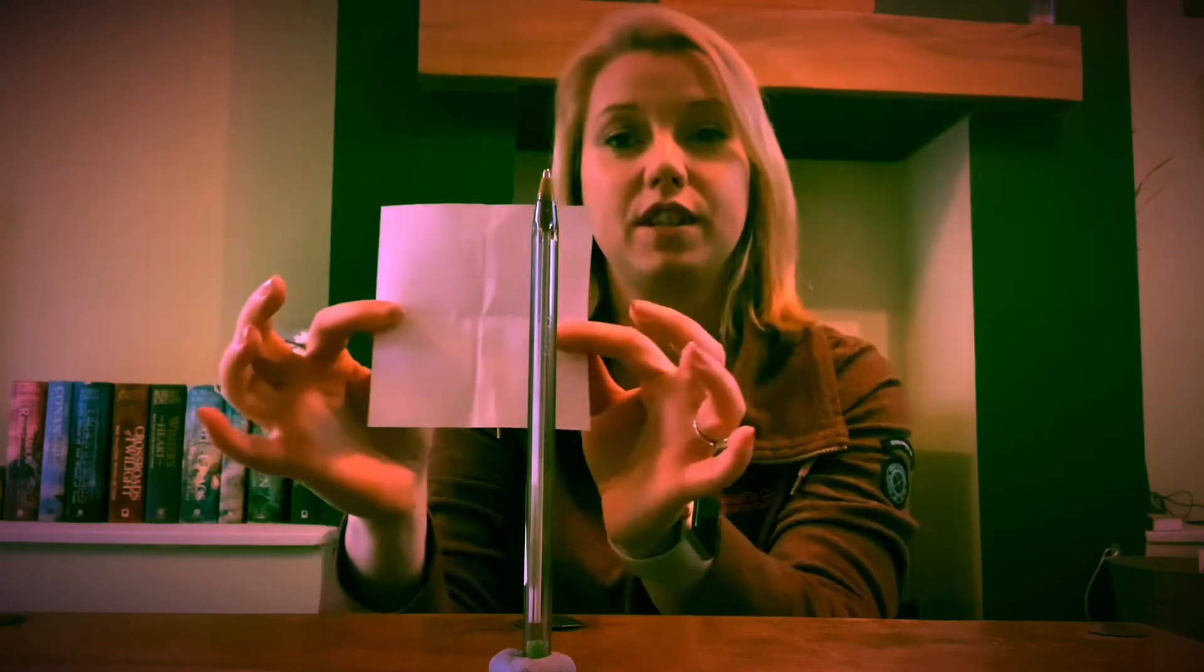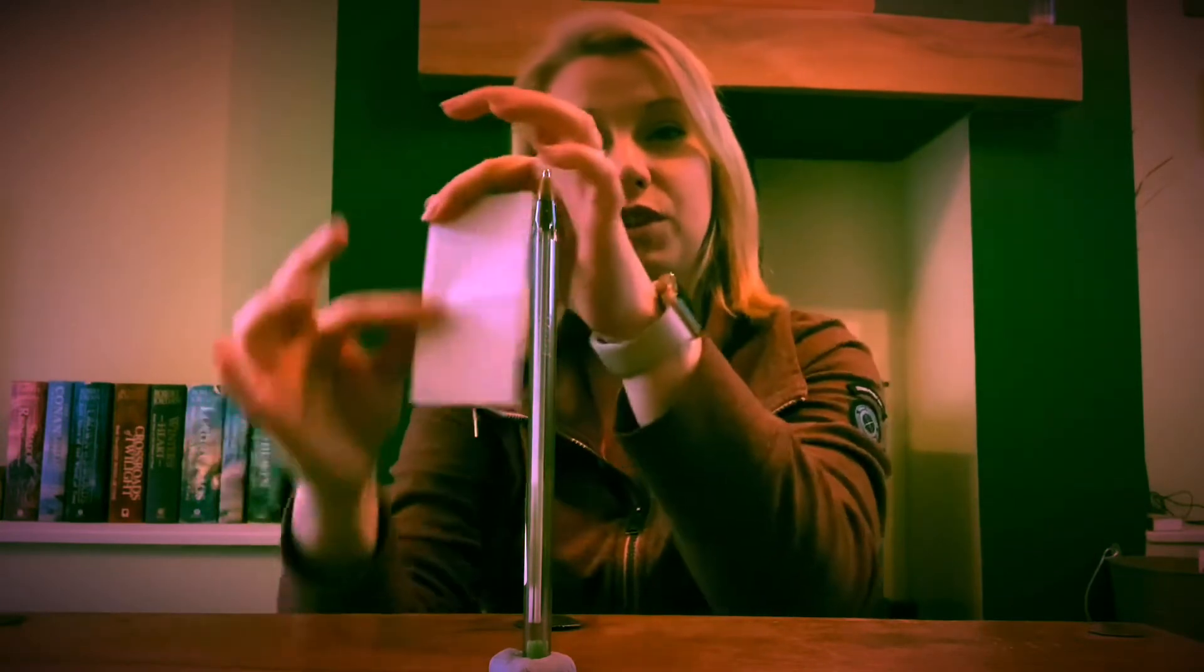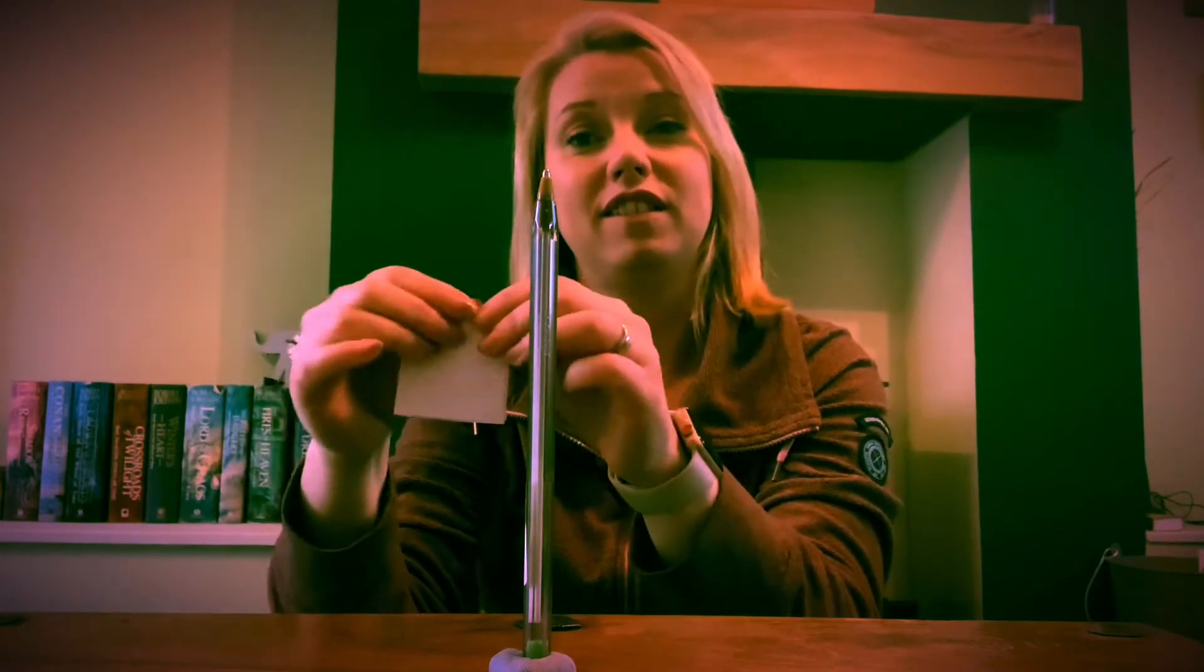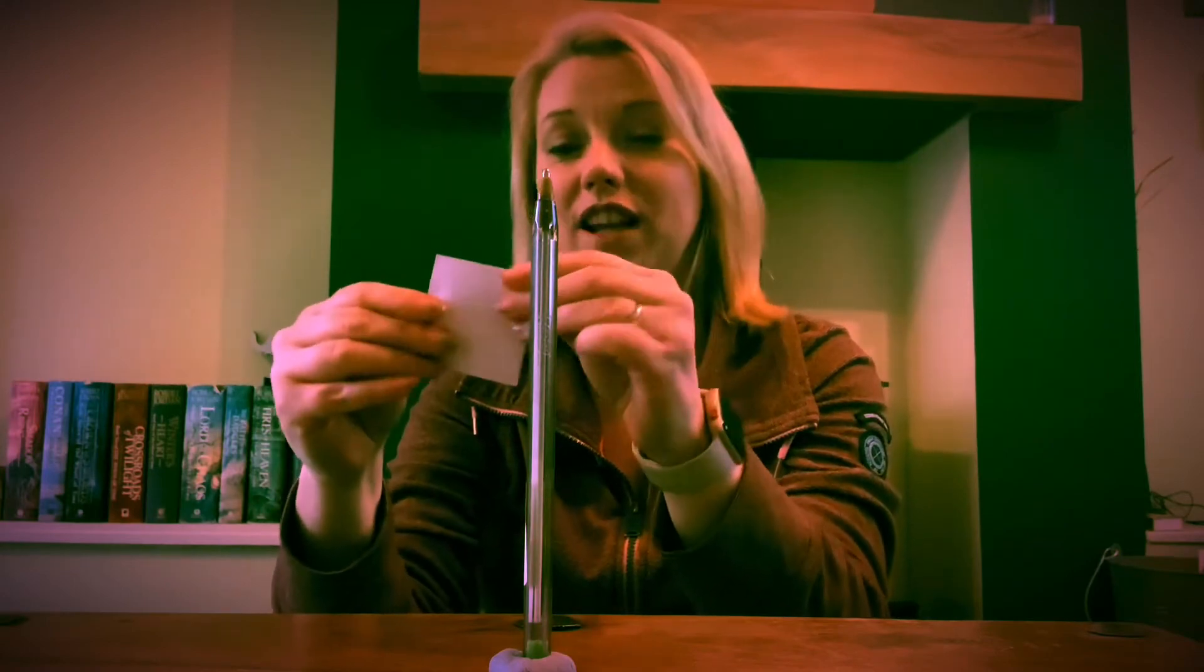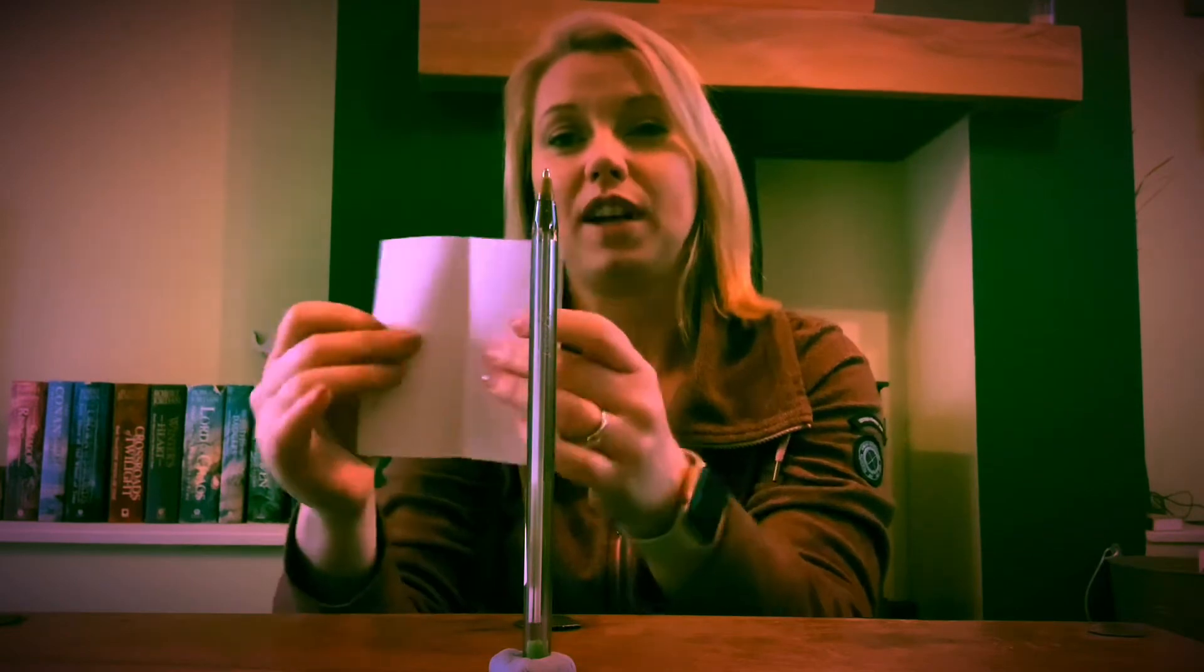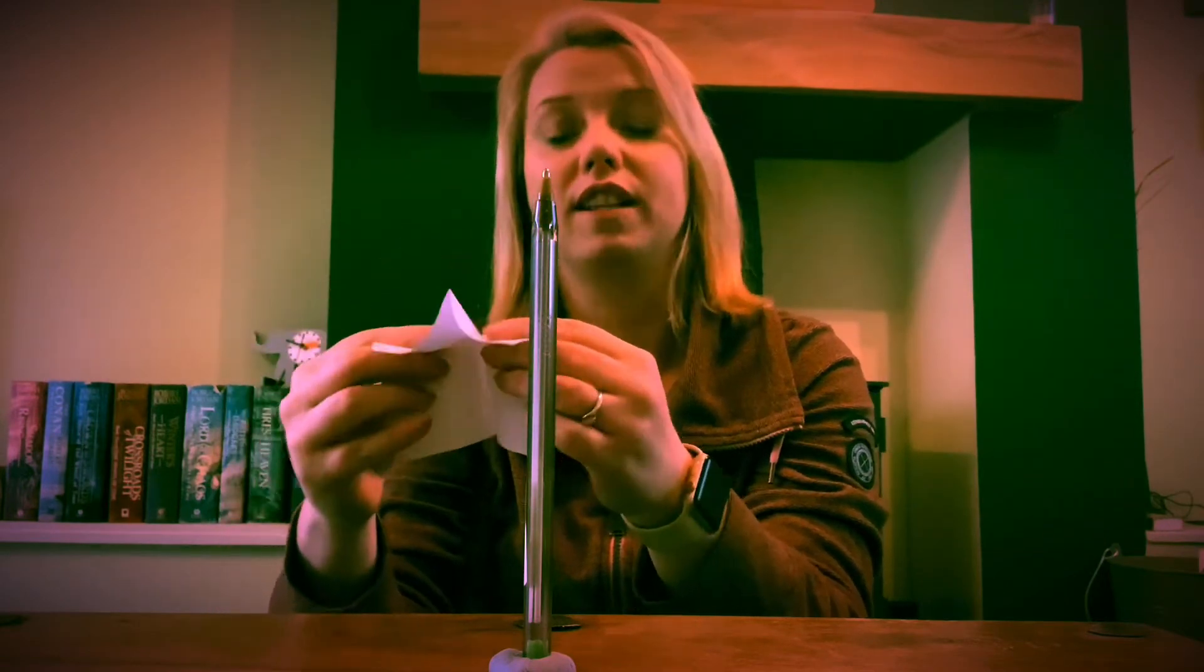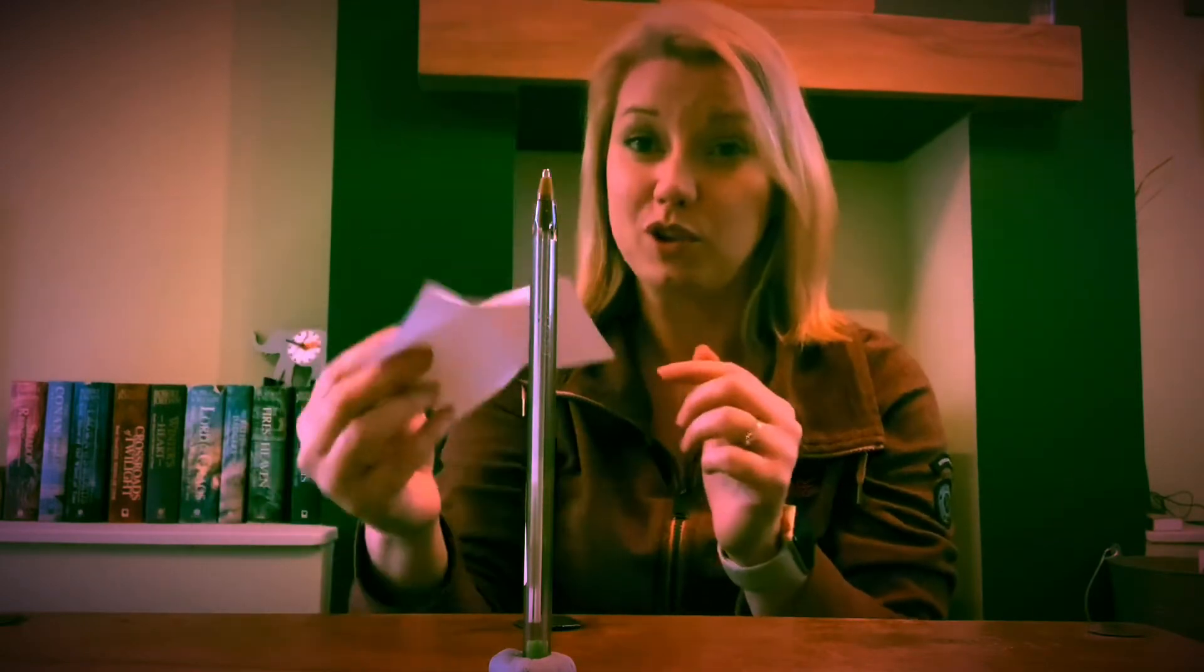And I want you to fold it in half and then we're going to fold it in half again. We know if we folded something in half and then in half again it's now in quarters. And then open it back up and you should see a little cross in the middle where the two fold lines meet. That's going to help you to balance this piece of paper on top of the pen or pencil just like that.